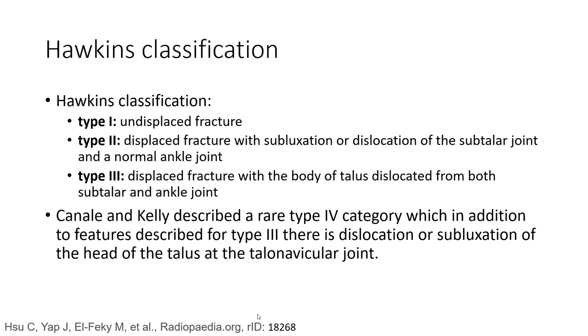Thaline classification. Thaline type 1 is an undisplaced fracture. Thaline type 2 is a displaced fracture with subluxation or dislocation of the subtalar joint and a normal ankle joint.